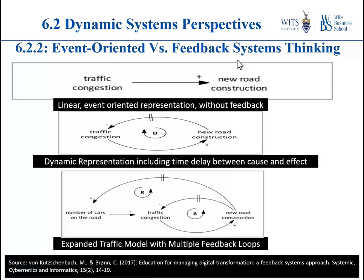This is what feedback systems thinking exposes — unintended consequences that would not be obvious from linear thinking. Simply saying 'traffic congestion, let us construct a new road' is unlikely to solve the problem. As you build new roads, you're likely to have more cars on the roads, making the problem worse. This introduces the important concepts of balancing and reinforcing feedback loops.